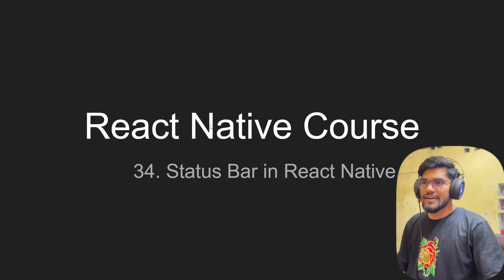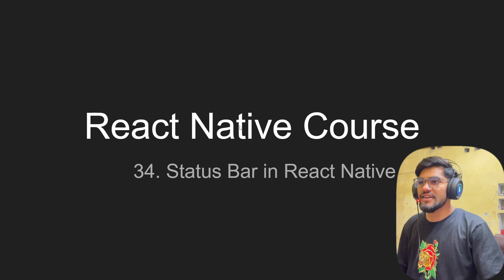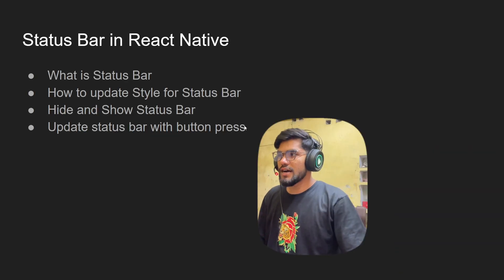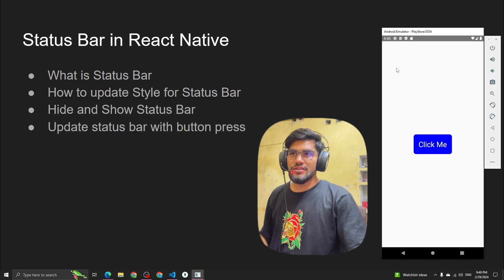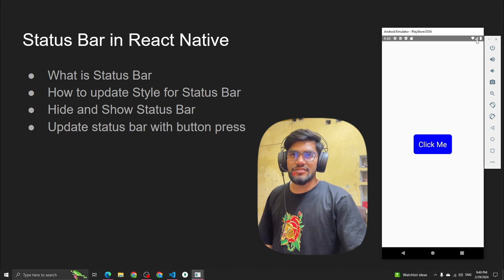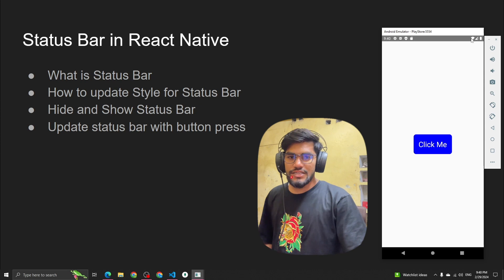Hey guys, welcome back to the React Native course. In this video we are going to talk about the status bar in React Native. So let's understand what the status bar is. If you see this emulator, on the top is the time, network indicator, and battery percentage — that's what you can see on the status bar.